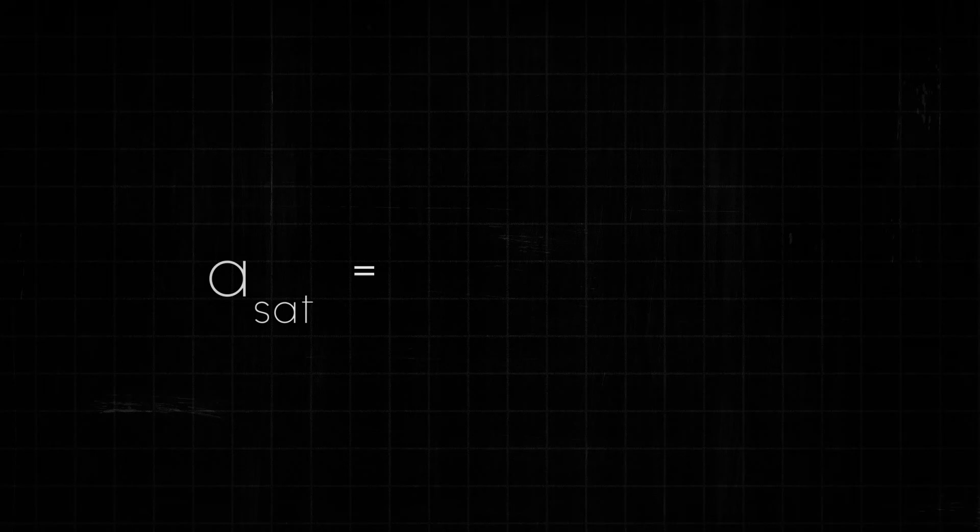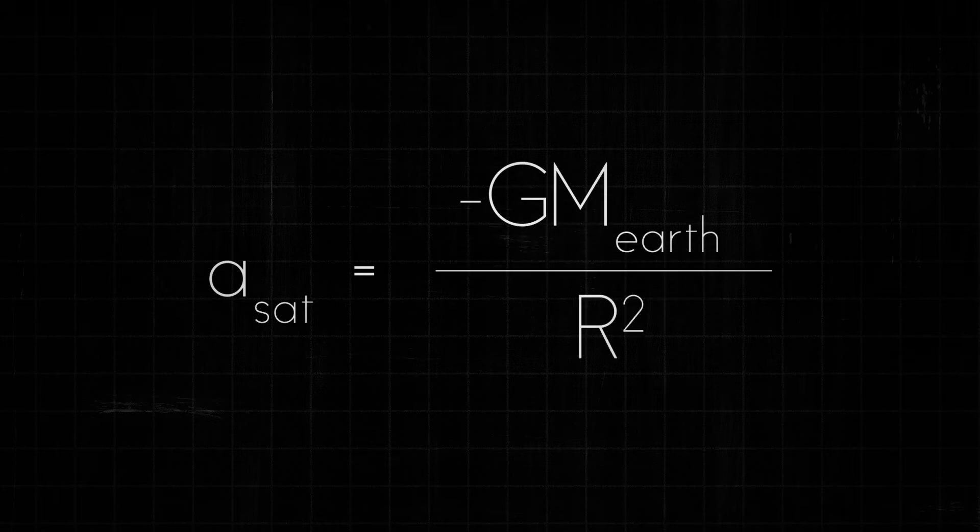Since the mass of the satellite is on both sides of the equal sign, we can cancel them out, and the equation is further reduced. Now we have the acceleration of the satellite is equal to the negative of the gravitational constant times the mass of the Earth divided by the distance between the center of the Earth and the satellite squared.